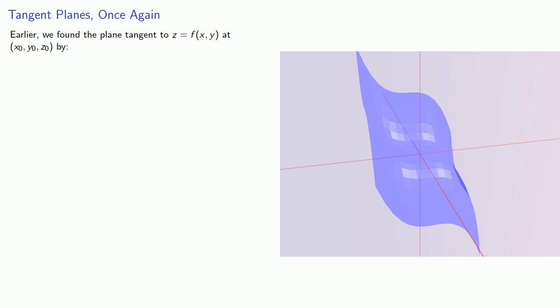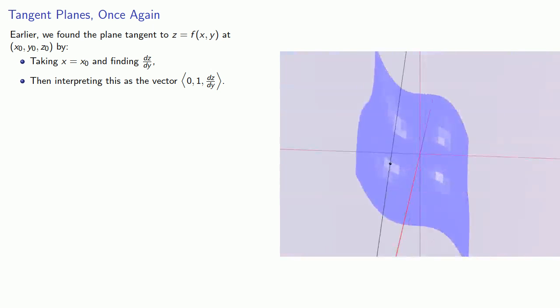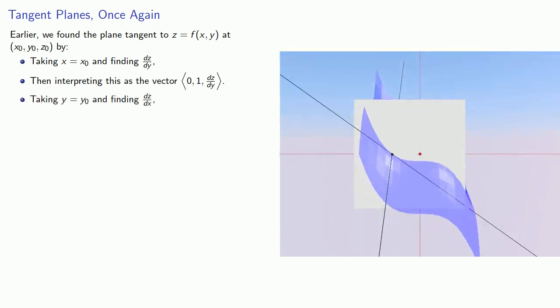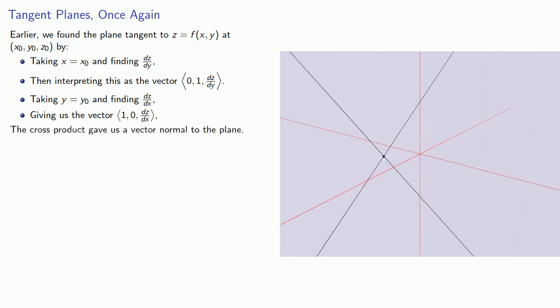Earlier we found the plane tangent to a surface at some point by taking x equal to x₀, which gave us a curve in the yz plane, so we could find dz/dy and interpret this as a vector. Then we let y equals y₀, and that gave us a curve in the xz plane, so we could find dz/dx, which also gives us a second vector. This actually gave us the direction vectors for two tangent lines, so we took the cross product to get a vector normal to the plane. Once we have that normal vector, we can write the equation.